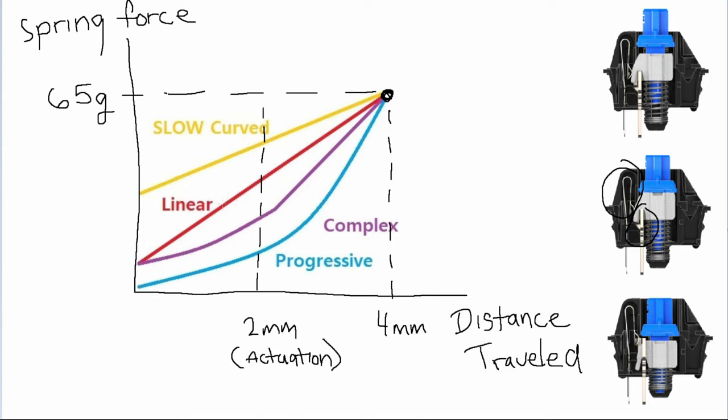Sprit has multiple slow spring variants which all get less steep the higher in number we go up. For example, there are slow extremes, slow extreme 2s, and slow extreme 3s. The 3s will start off with the most preload and will have the least variance between the bottom out and the beginning forces.